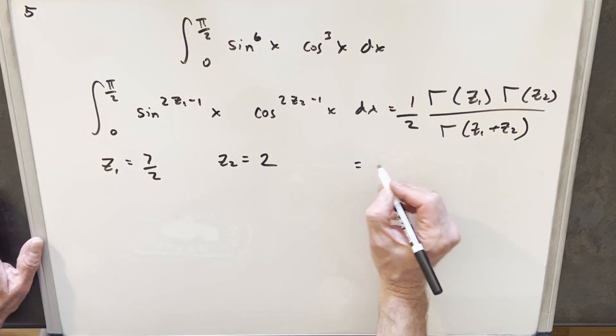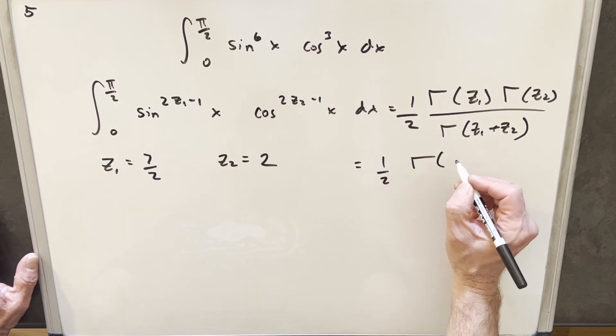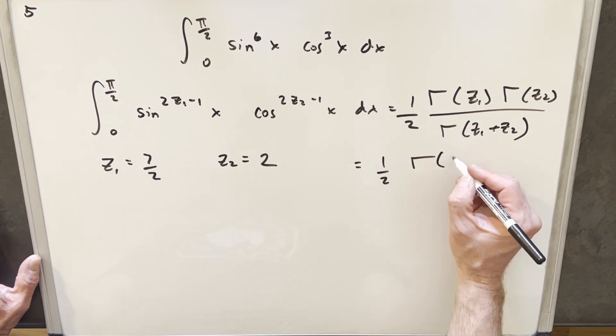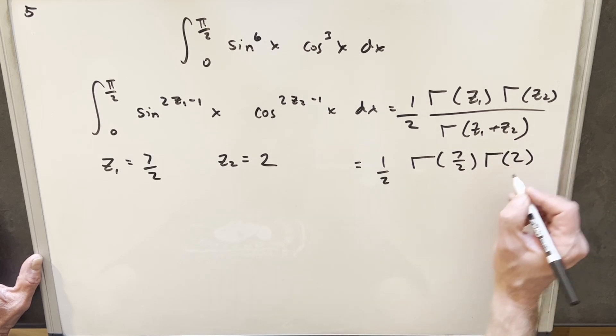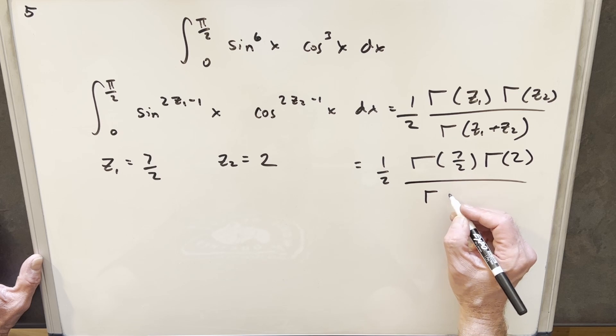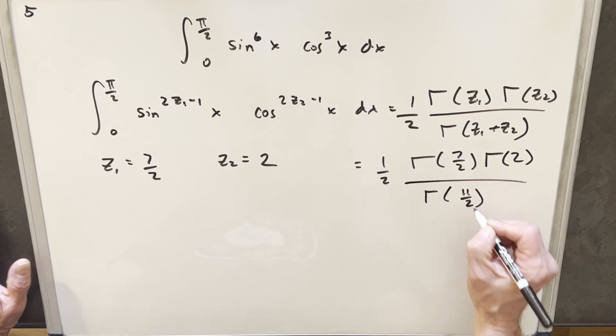And then we'll go to our formulas. We're going to have our 1/2. We're looking for Γ(7/2) times Γ(2). Then we need to add these two together. And we're going to have in the denominator Γ(11/2).